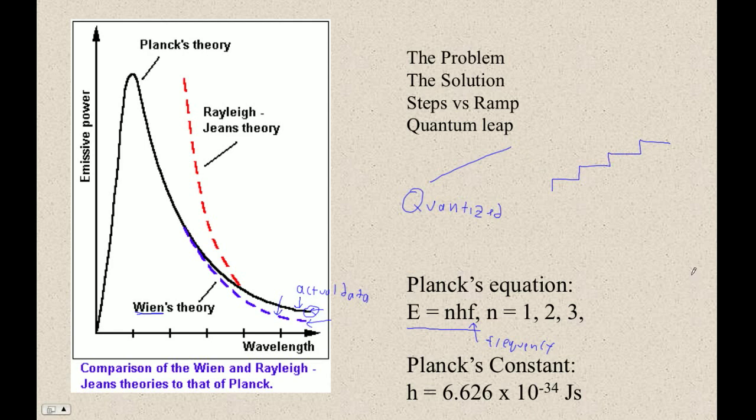Now, why did Planck do that? Well, he was trying to get something to match this, and when he did that, it matched this data. It worked. He had the answer. It's just like when you're doing your homework problems, how do you get the answer in the back of the book? Well, you just sit there and try, you see the answer in the back of the book, and you mess around until you get the answer that's in the back of the book. We all do that.